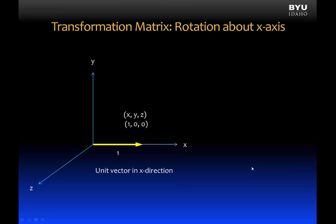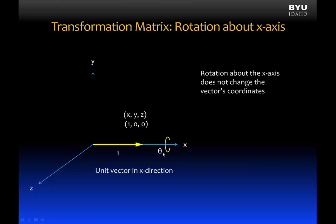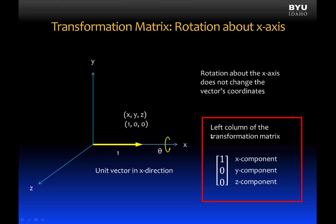Let's begin with rotation about the x-axis. We start with a three-dimensional axis system x, y, and z, and place a unit vector in the x-direction. When we rotate this vector through some angle theta, rotation about the x-axis does not change the vector's coordinates. So we can write those coordinates — this will be the left column of the transformation matrix — as the vector: 1 for the x-component, and 0 for both the y and z components.